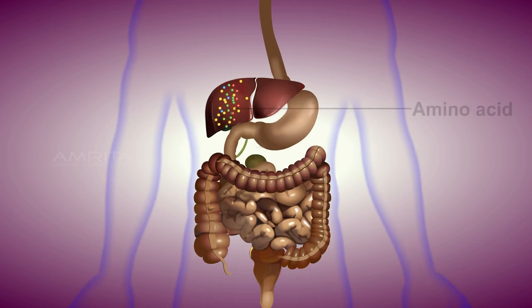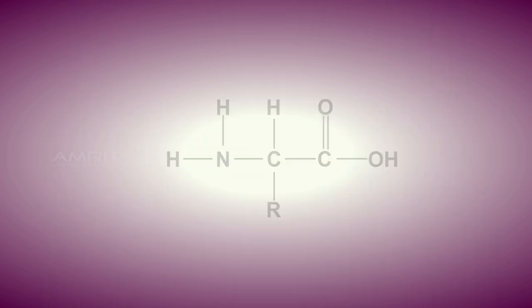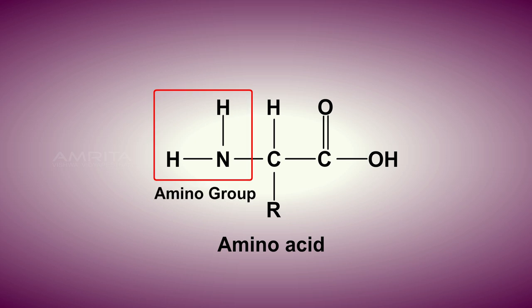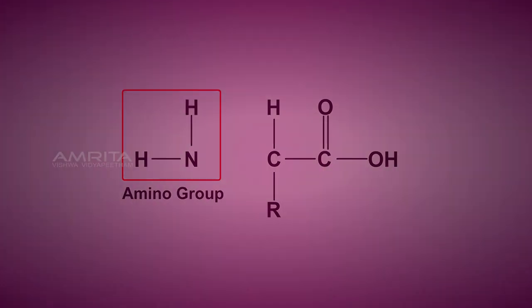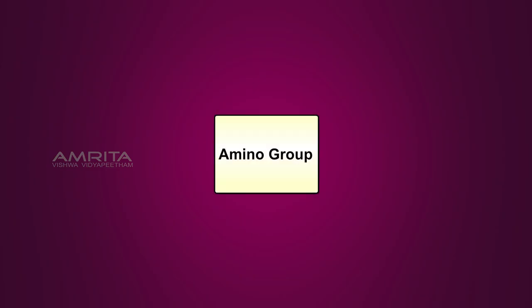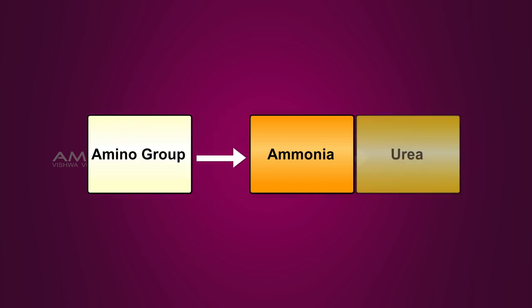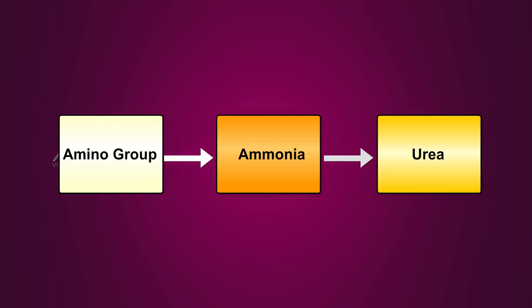Due to this process, amino groups are removed from the amino acids present in the proteins. These amino groups are converted to ammonia, which is highly toxic, and ammonia is ultimately converted to urea.